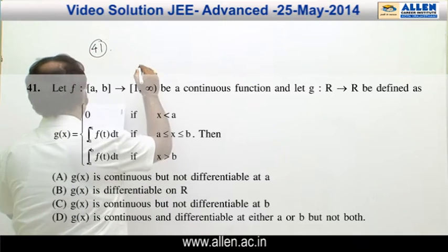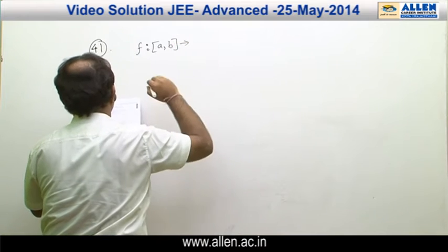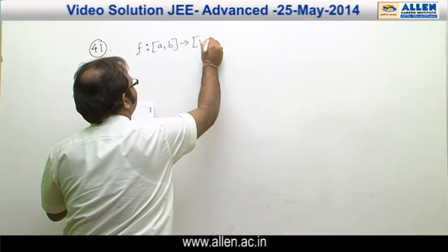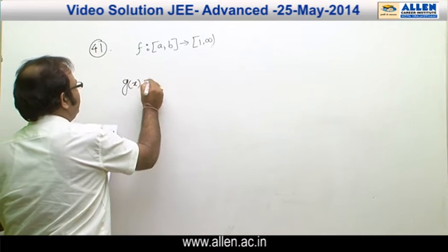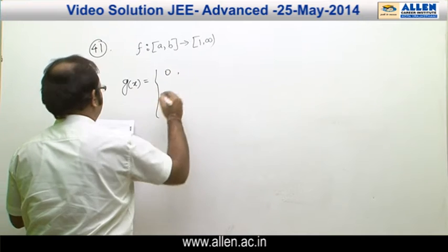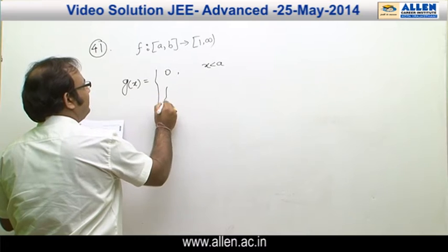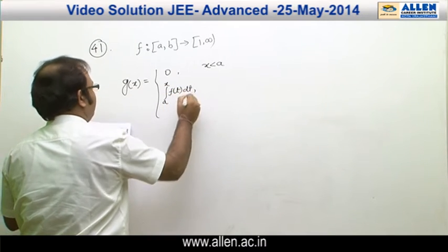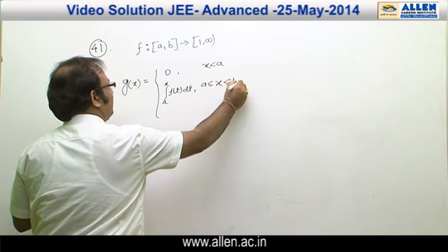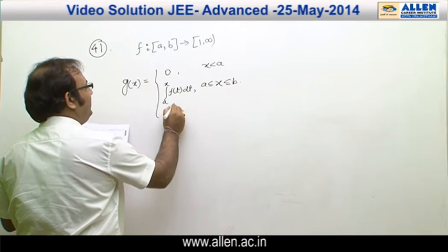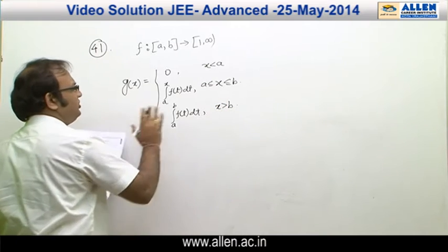In question number 41, we are given a continuous function f from closed interval [a, b] to closed interval [1, infinity), and another function g(x) defined from R to R. The definition of g(x) is: g(x) = 0 for x less than a; the integral from a to x of f(t) dt for a ≤ x ≤ b; and the integral from a to b of f(t) dt for x greater than b.